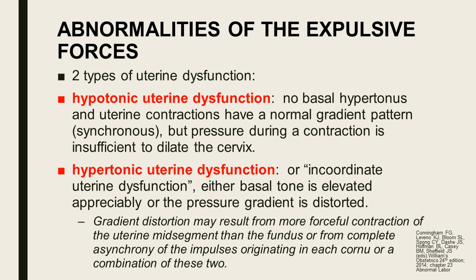For abnormalities of expulsive forces, there are two types of uterine dysfunction. Hypotonic uterine dysfunction: no basal hypertonus, contractions have a normal gradient pattern, but pressure is insufficient to dilate the cervix. Hypertonic uterine dysfunction — also called incoordinate uterine dysfunction — has elevated basal tone or a distorted pressure gradient, which may result from more forceful contraction of the uterine mid-segment than the fundus, asynchrony of impulses from each cornu, or both.